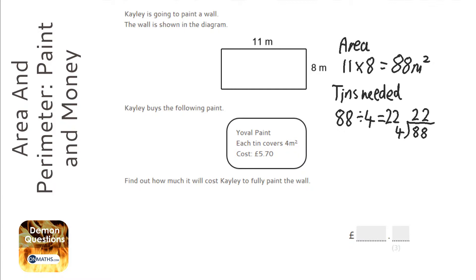So, I need 22 tins. Now, here's the difficult bit. The cost is £5.70 and I need 22 of them. So, if I work out, using a quick little diagram. If I've got one tin, that will cost £5.70.